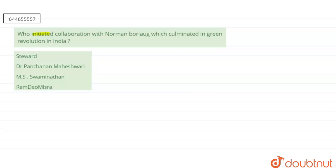The question says: Who initiated collaboration with Norman Borlaug which culminated in Green Revolution in India? First is Steward, second is Dr. Panchanan Maheshwari, third is MS Swaminathan, and fourth one is Ramdev Mishra. So we're talking about a question regarding the Green Revolution in India.